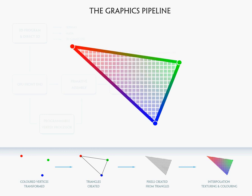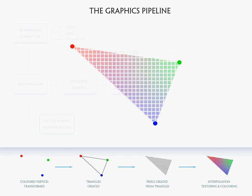This interpolation happens to all of the data. For example, if this blue vertex has a normal pointing this way and the green vertex has a normal pointing this way, each of the pixels along the way will have a normal somewhere in between. The normals are interpolated across the triangle, so each pixel gets its own normal that's partway in between. The same thing works with UV coordinates — if this blue vertex has a UV value of 0 and the green vertex has a UV value of 1, all of the pixels across the triangle will be somewhere in between 0 and 1. All the data contained in each vertex gets interpolated from one vertex to the next right here in the rasterization and interpolation stage.